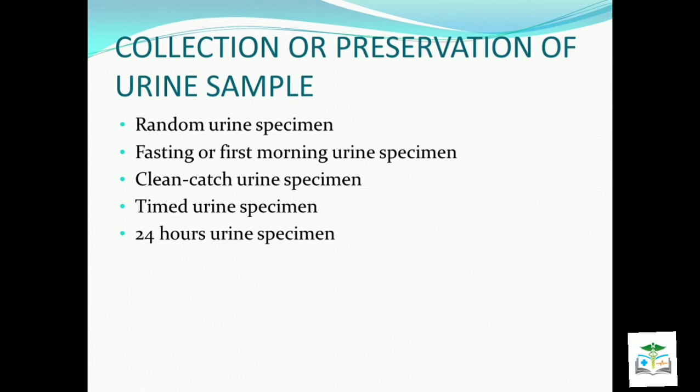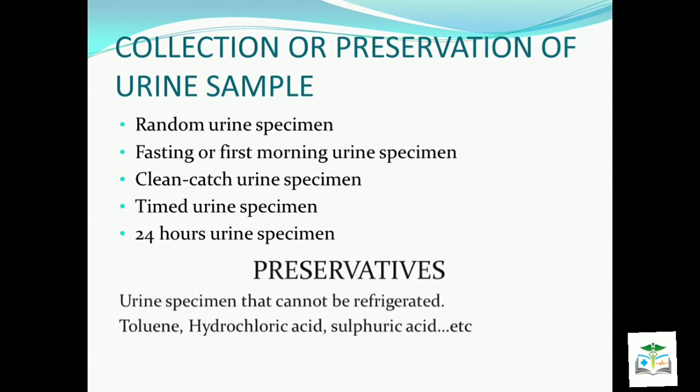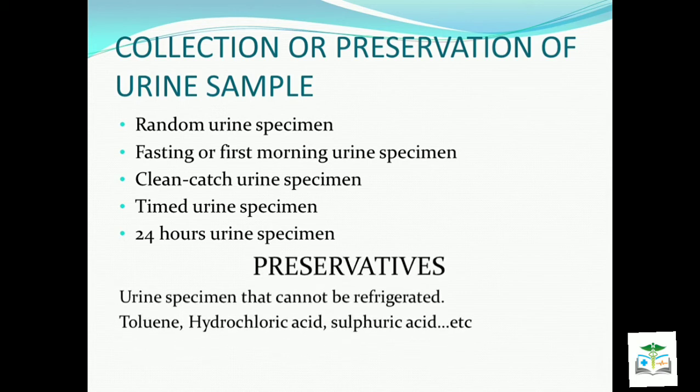Now, preservatives. For urine specimens that cannot be refrigerated, we preserve urine using toluene, hydrochloric acid, and sulfuric acid — so that no bacterial or viral infection occurs in the urine sample, which could otherwise cause problems in our results.